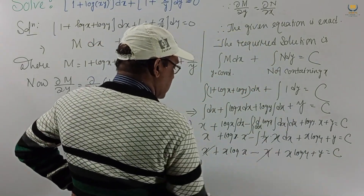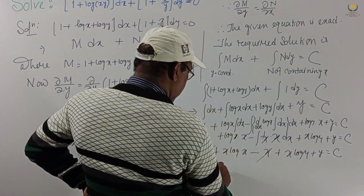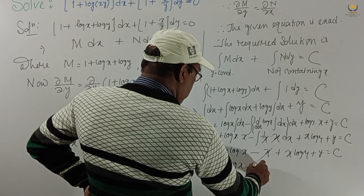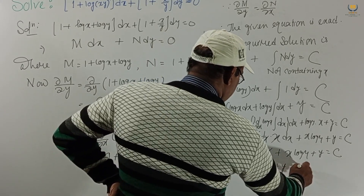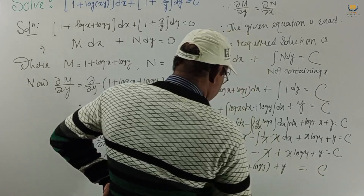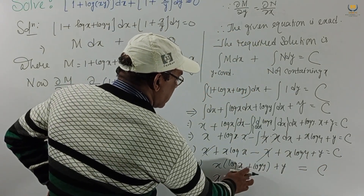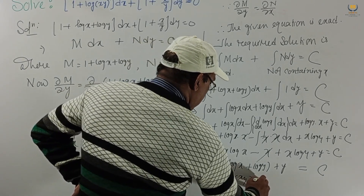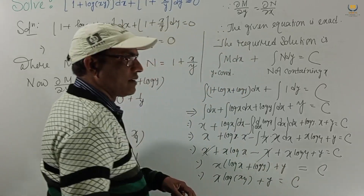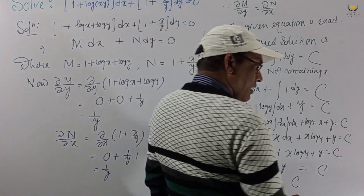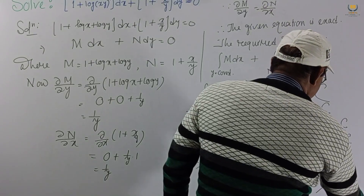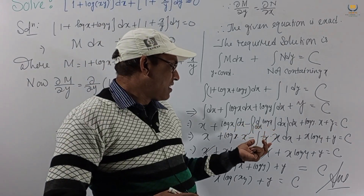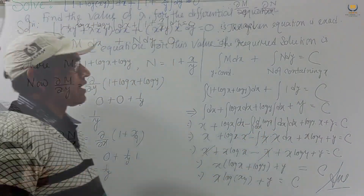Simplifying: the x and minus x cancel, and taking x common from x log x and x log y, we get x(log x plus log y) plus y equals c, which is x·log(xy) plus y equals c. This is the final answer of the given problem — a very easy and interesting solution. Now consider another problem.